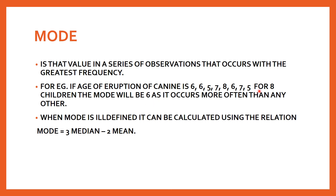When the mode is ill-defined - for example, if both 6 and 7 each appear three times - it is calculated by the relation: Mode = 3 × Median − 2 × Mean. First, measure the median and the mean for the observation, then apply them into this formula: three times the median minus two times the mean, and you get the particular mode.